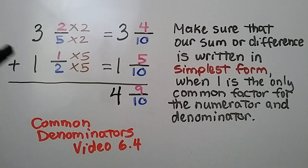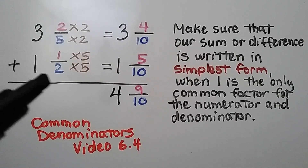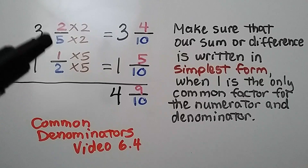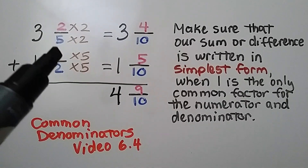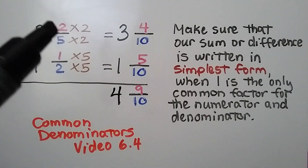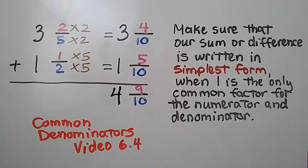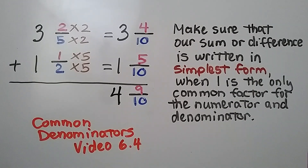Here we have the mixed number 3 and 2 fifths, and we're adding it to 1 and 1 half. We need to find a common denominator — we can just multiply 5 times 2, the denominators, to get the common denominator 10. 5 times 2 is 10, so we need to multiply the numerator by the same factor 2. 2 times 2 is 4, giving us 3 and 4 tenths as an equivalent mixed number.